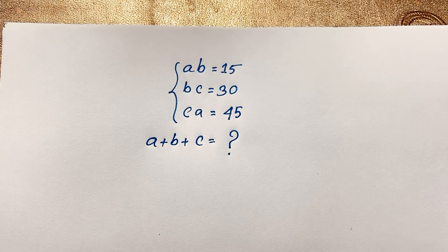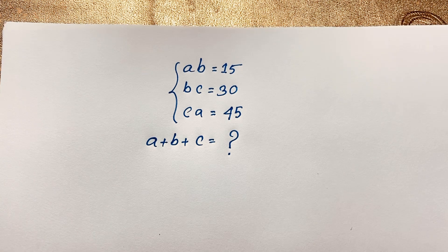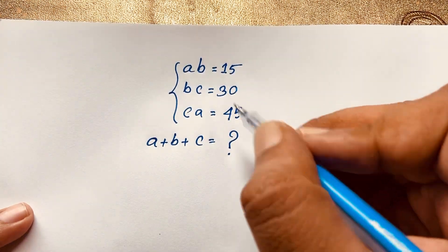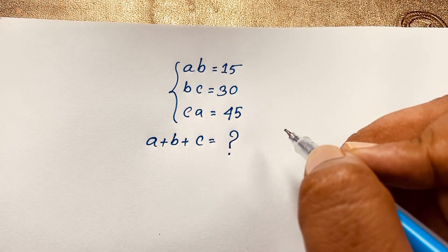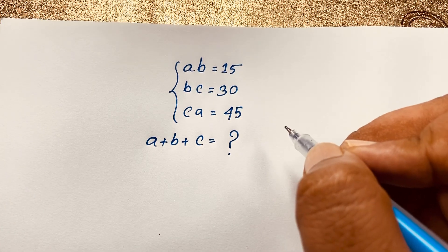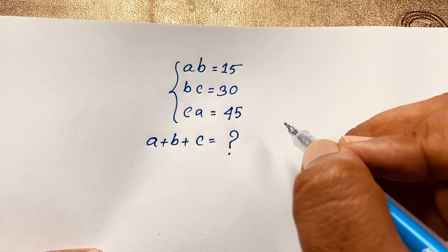Welcome to my YouTube channel. Today we solve a nice algebra problem — a math olympiad question. The problem is: ab = 15, bc = 30, and ca = 45. Find a + b + c.